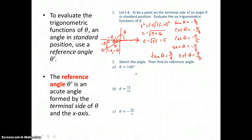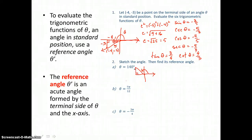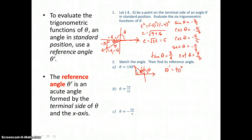Now we want to sketch the angle in problem 2, then find its reference angle. To sketch 140 degrees, we start on the positive x-axis and move in the positive direction 140 degrees. We're going to be short 40 degrees of that x-axis, and that's where we find theta prime. So theta prime equals 40 degrees — the acute angle formed with the terminal side and the x-axis.